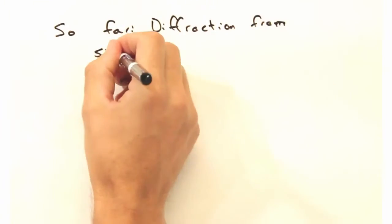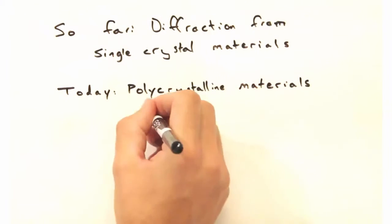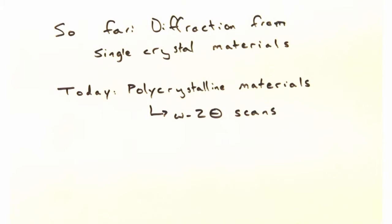So far we've looked at diffraction from single crystalline materials, but today we're going to look at polycrystalline materials and introduce the main measurement technique, omega 2 theta scans.